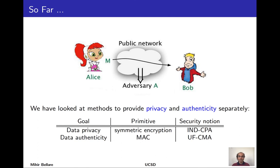We have considered Alice and Bob communicating across a public network where the adversary resides. They have had two goals: privacy of the data, which protects the confidentiality of message M, and authenticity, which gives Bob the guarantee that a message claiming to come from Alice really did so and wasn't modified along the way. We solved both problems by defining a security target and providing schemes that met it.